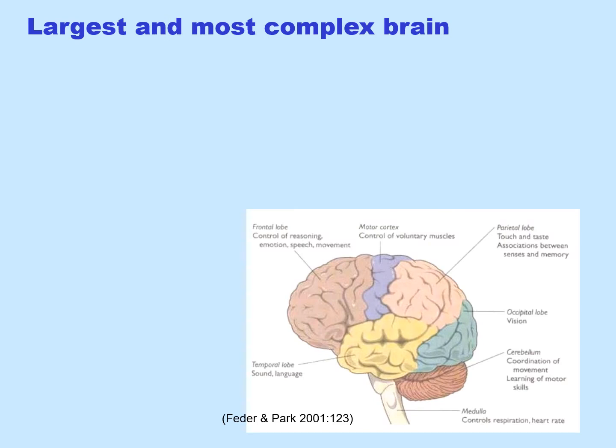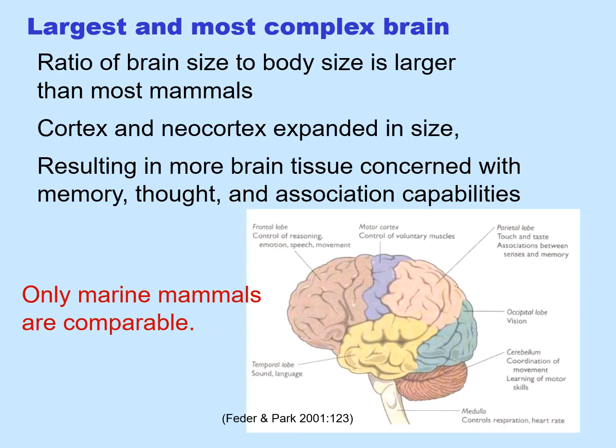Primates have the largest and most complex brain among mammals — that is, in relation to their body size. The ratio of brain size to body size is larger than most mammals. Both the cortex and neocortex have expanded in size, resulting in more brain tissue concerned with memory, thought, and association capabilities. Only marine mammals are comparable.